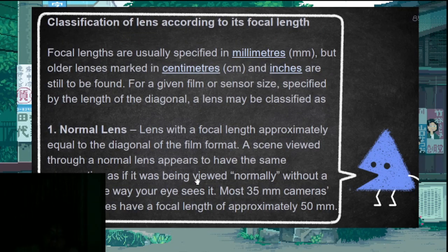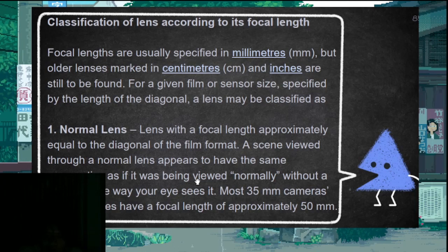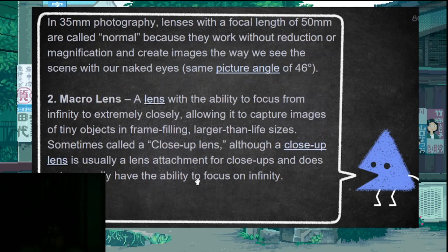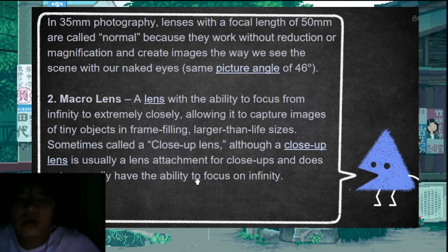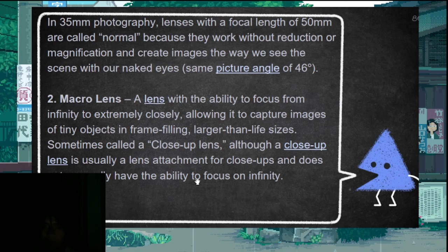Classification of lenses according to focal length. Normal lenses have a focal length of 35mm to 50mm. The angle of view of normal lenses is about 45 degrees.